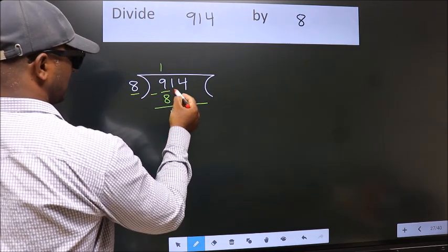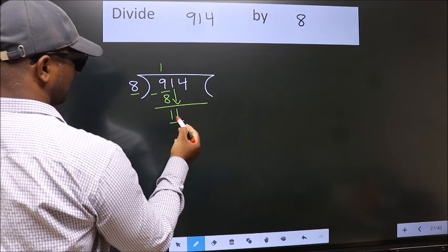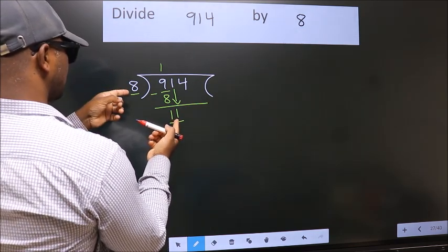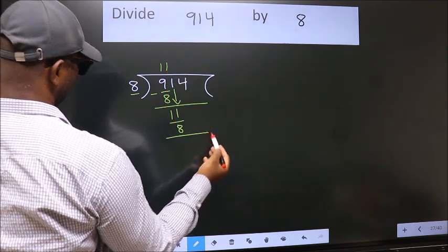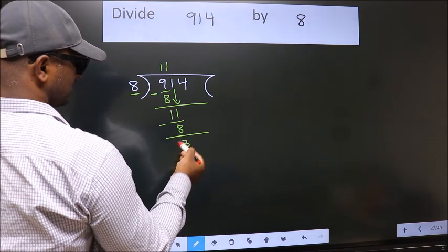After this, bring down the beside number. So, 1 down. So, 11. A number close to 11 in 8 table is 8 once 8. Now, we subtract. We get 3.